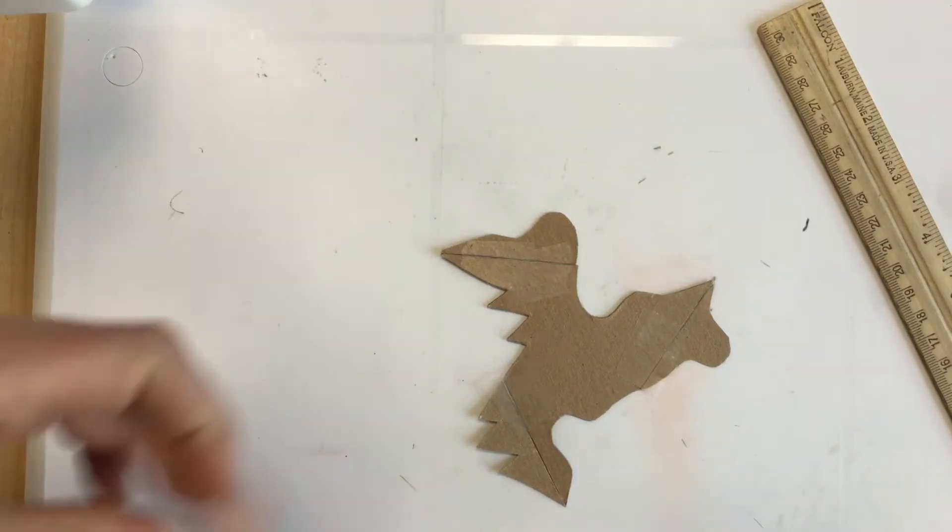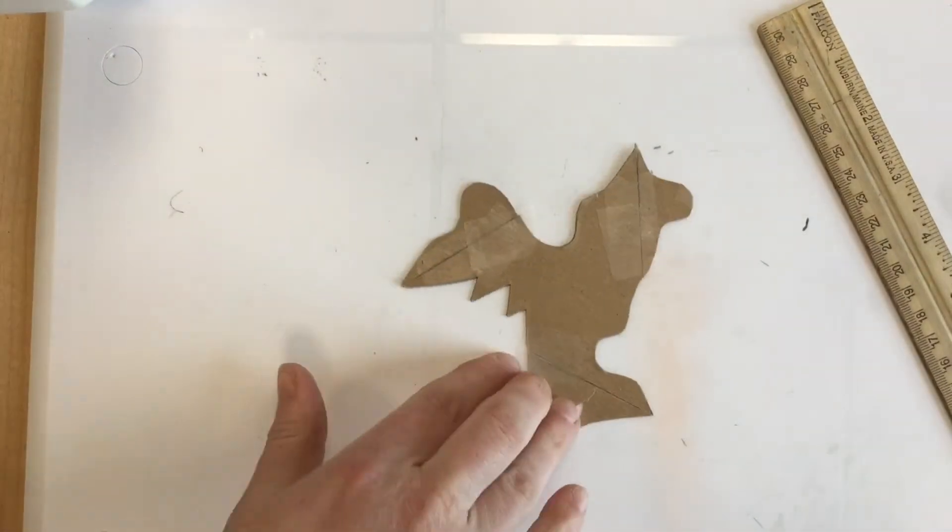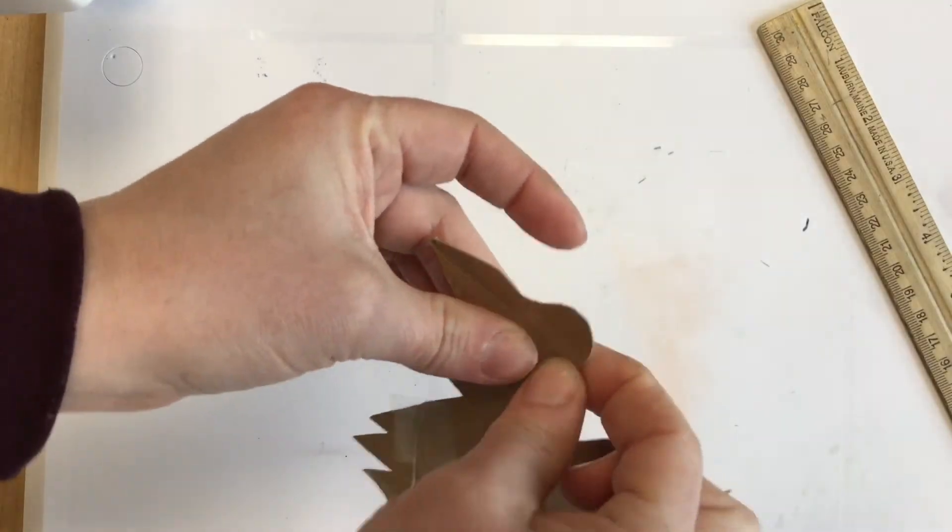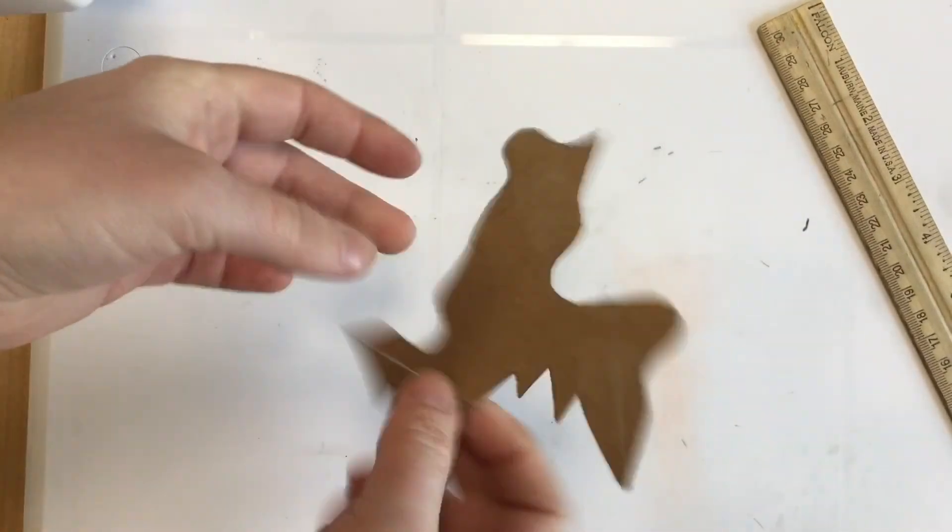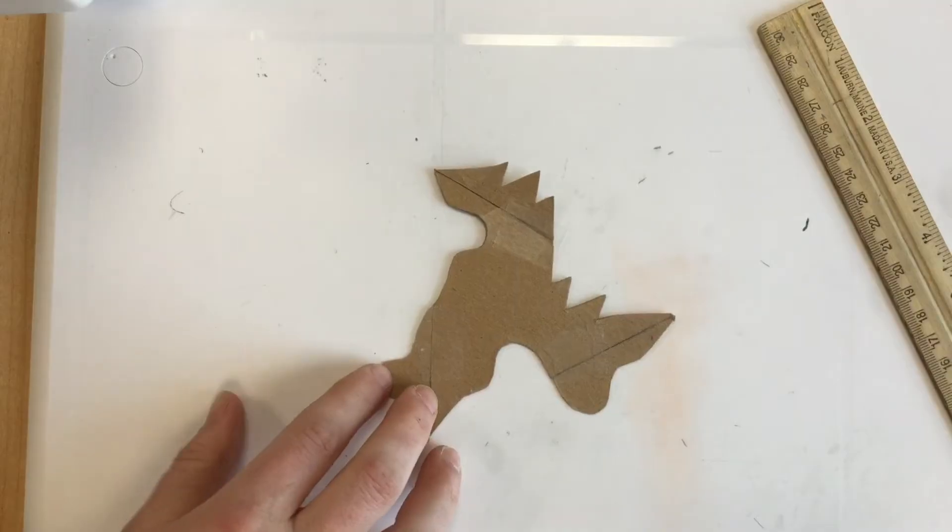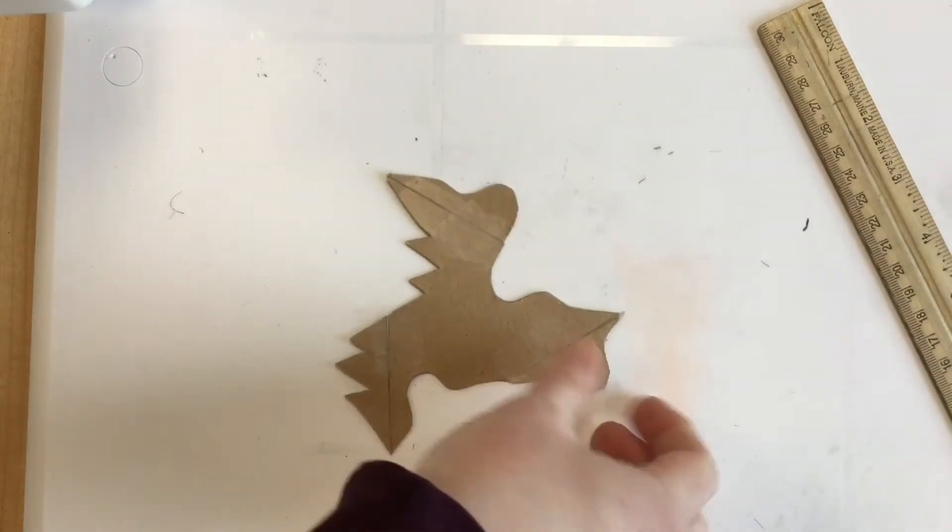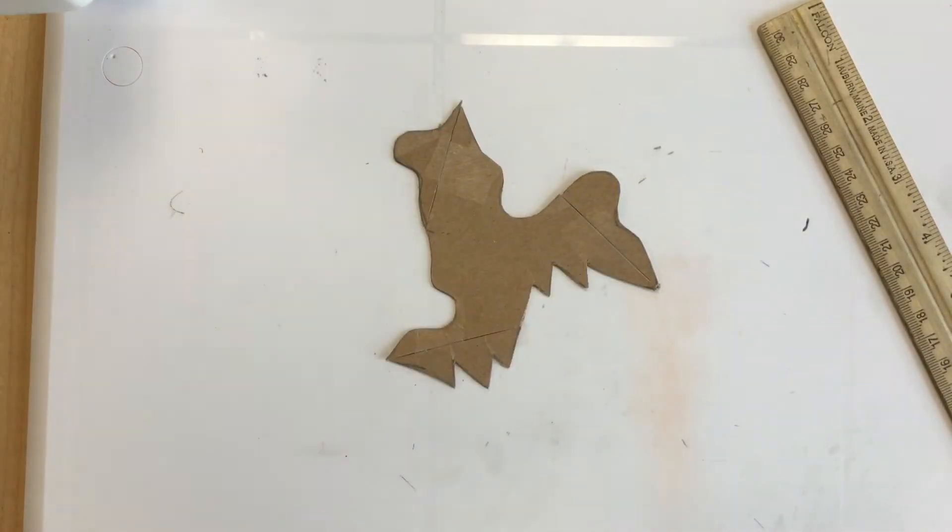Then just like before, after you tape everything down, the hardest part is to look at it, rotate it around and just try and think about what it might look like or what the shape might be. Ha! I know what it is.